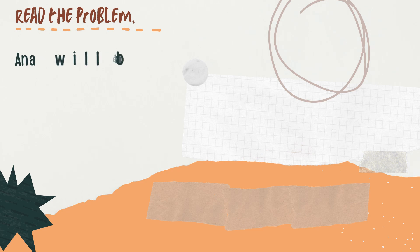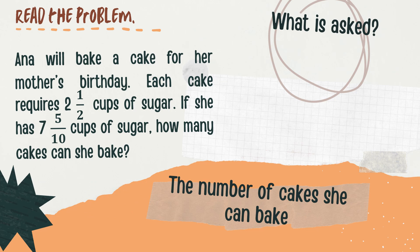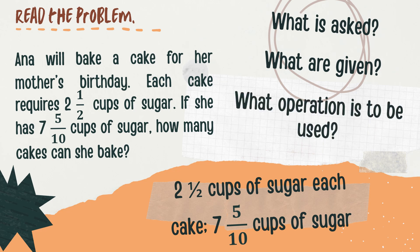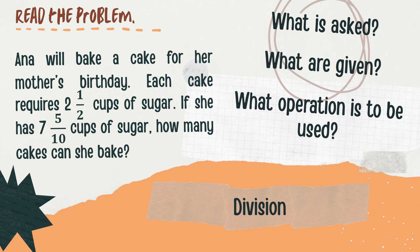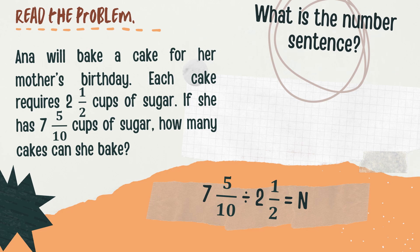Let's begin our lesson with a problem. Anna will bake a cake for her mother's birthday. Each cake requires 2 and 1 half cups of sugar. If she has 7 and 5 tenths cups of sugar, how many cakes can she bake? What is asked? The number of cakes she can bake. What are given? 2 and 1 half cups of sugar each, and 7 and 5 tenths cups of sugar. The operation to be used is division. The number sentence is: 7 and 5 tenths divided by 2 and 1 half equals N.